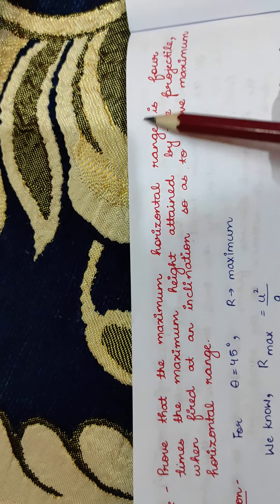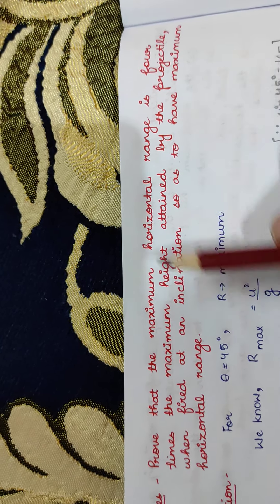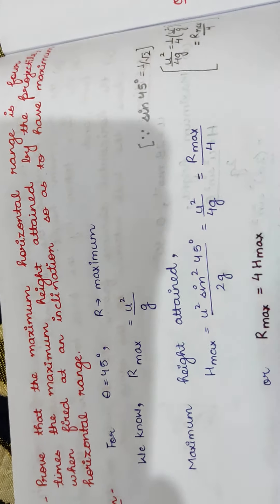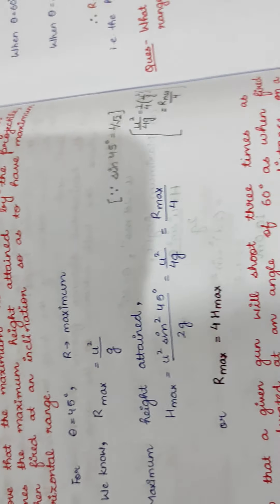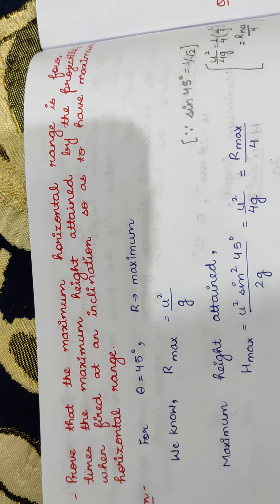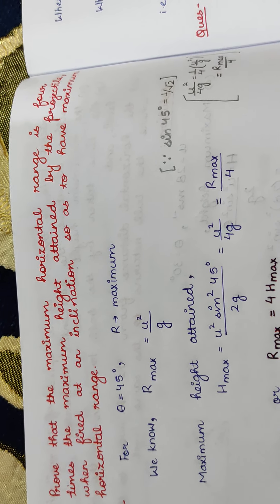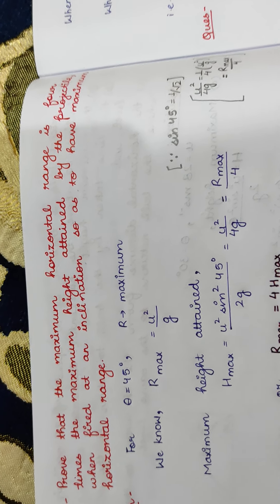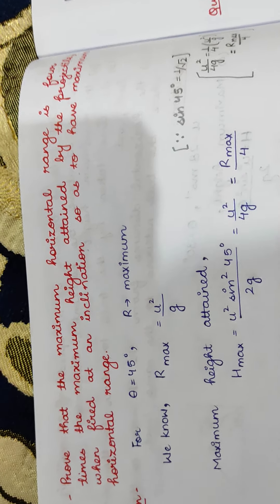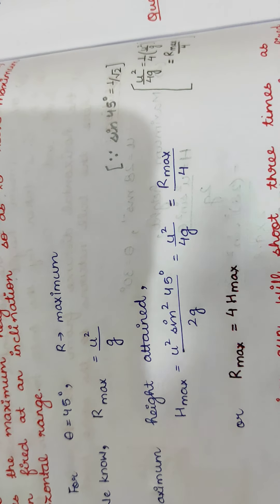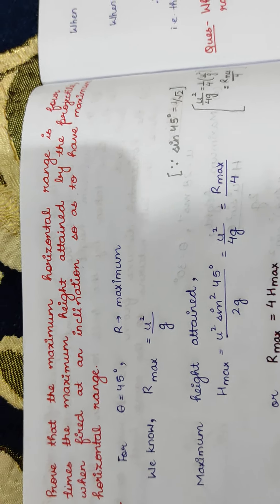What we have to prove is that the maximum horizontal range is four times the maximum height attained by the projectile. From the derivation of angular projection, the horizontal range is given by R = u² sin2θ / g, and the maximum height is given by H = u² sin²θ / 2g. Keeping these expressions in mind, we will solve this question.